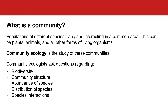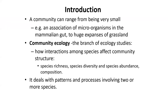Community ecologists examine how communities are structured, and we are going to learn some of these things: what species live within the communities, what their biodiversity is like, the interaction of species within these communities, etc. A community can range from being very small, like an association of microorganisms in the mammalian gut, to huge communities such as grasslands. Community ecology is a branch of ecology that looks at how organisms interact with each other and examines community structure such as species richness, diversity, abundance, etc. It deals with patterns and processes involving two or more species.